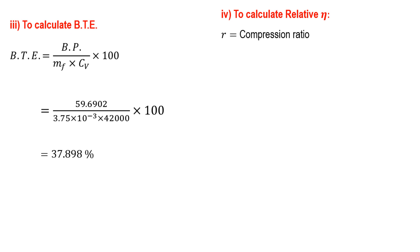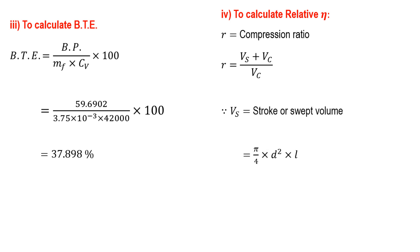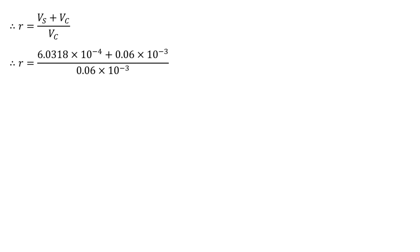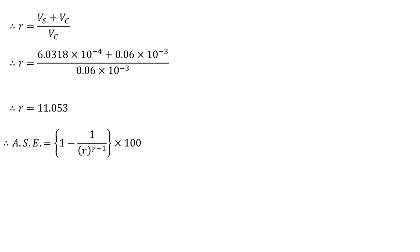For relative efficiency we compare with the air standard efficiency. For a petrol engine (Otto cycle), we first find the compression ratio. Stroke volume equals pi over 4 times D squared times L, giving 6.0318 into 10 to the minus 4 cubic meters. Compression ratio equals (stroke volume plus clearance volume) divided by clearance volume, which gives 11.053. Air standard efficiency for the Otto cycle is 1 minus 1 over R to the power (gamma minus 1), multiplied by 100. Substituting R equals 11.053 and gamma equals 1.4 gives an air standard efficiency of 61.7522 percent.